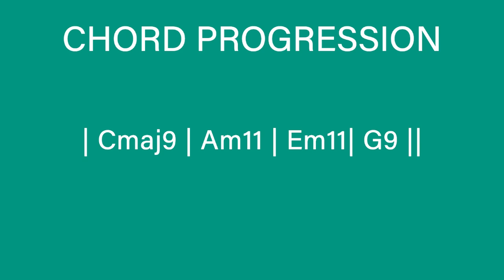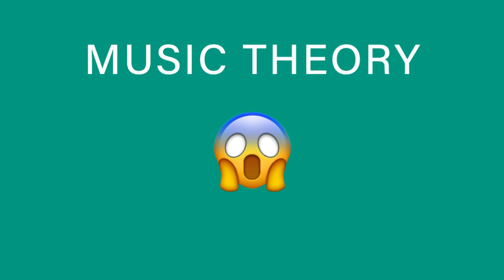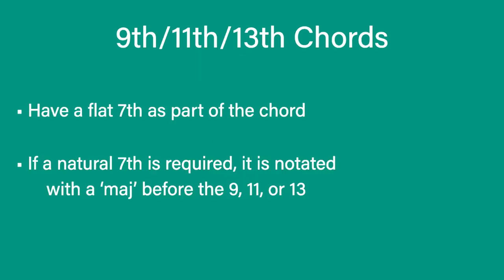The chords for this progression are C major 9, A minor 11, E minor 11, and G9. Now you don't have to worry about the extensions on these chords — which are the 9th and the 11th. Just focus on the chord tones: the roots, the thirds, the fifths, and the sevenths. A quick bit of music theory: 9th, 11th, and 13th chords all have a flat 7th as part of the chord. But if a natural 7th is wanted, it will be notated like a major 9 or major 11, so you know to use a natural 7th.